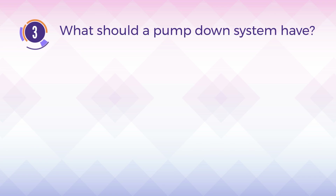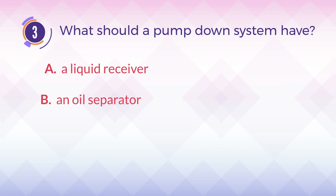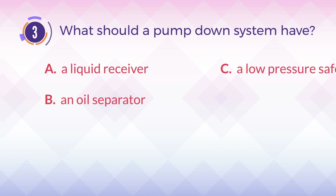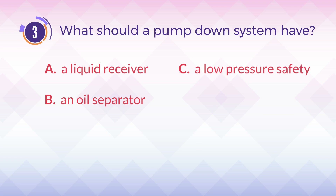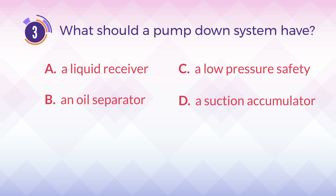Number 3. What should a pump-down system have? A. A liquid receiver. B. An oil separator. C. A low-pressure safety. D. A suction accumulator.